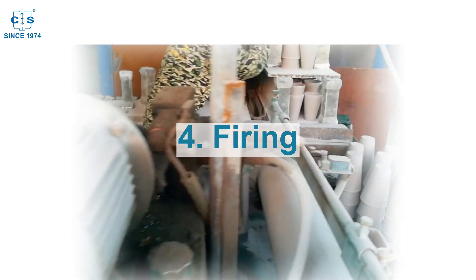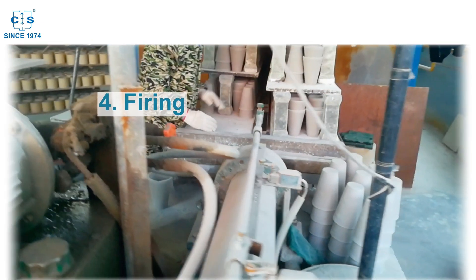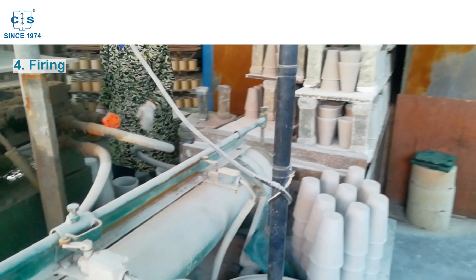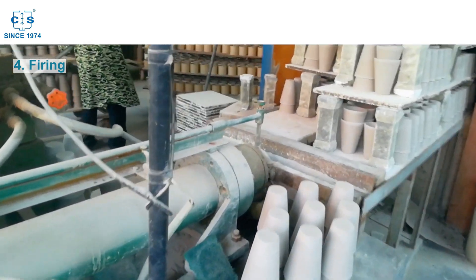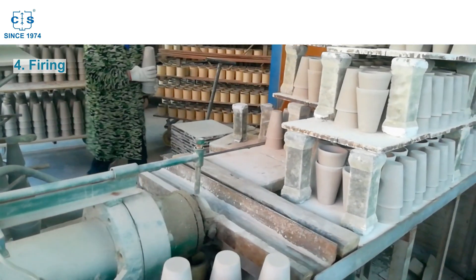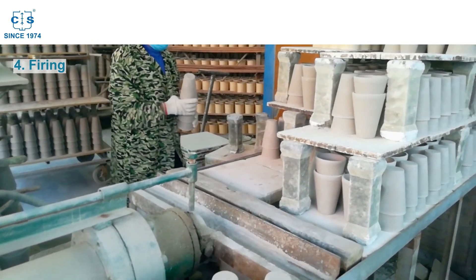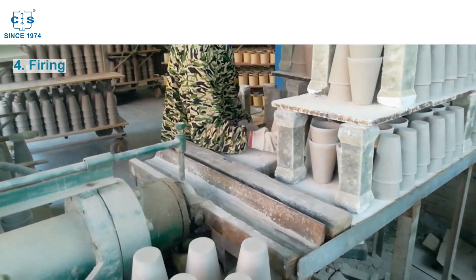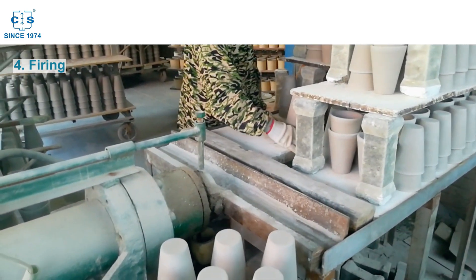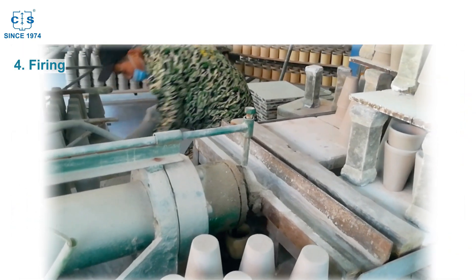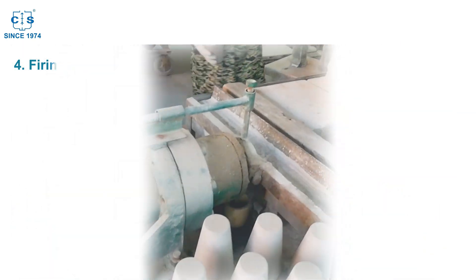Last, firing. The next step in the manufacturing process is firing, where the mold is heated to a high temperature to harden the refractory material and remove any remaining moisture. The firing temperature and duration depend on the type of crucible and the materials used.